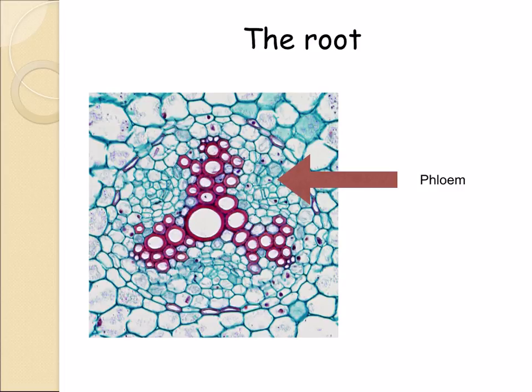Can you identify the endodermis and pericycle? The cambium is also difficult to see, but it is the layer of cells between the xylem and phloem. And that concludes our lesson.